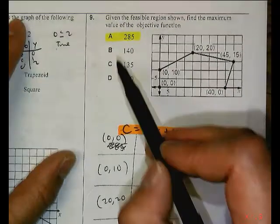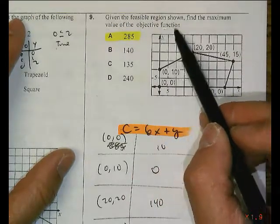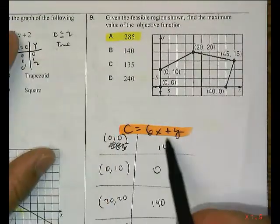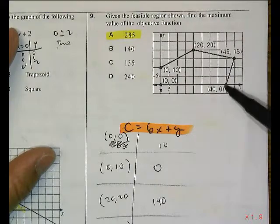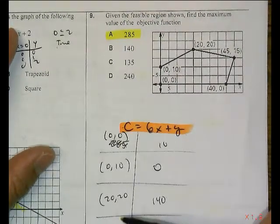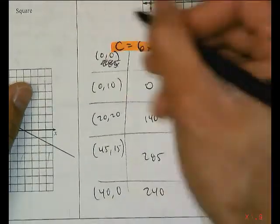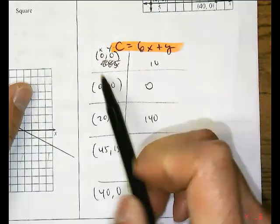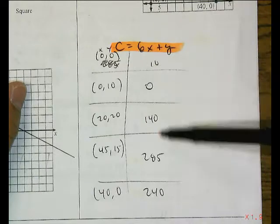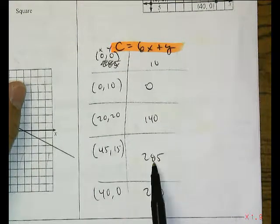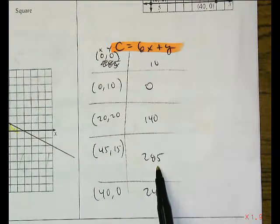Question number 9. Given the feasible region shown, find the maximum value of the objective function. So I asked you guys to write this down. That wasn't on your quiz and I told you right on the board. So for these problems you just need to take your vertices. Listed them all out here. Substitute them into your objective function. So there's your x and there's your y. And you get a c value. And because it's asking for the maximum, you're just looking for the largest number. The largest number there is 285. The maximum is at (45, 15) and you get an output of 285. Letter choice A is your answer.